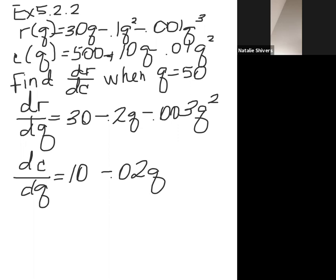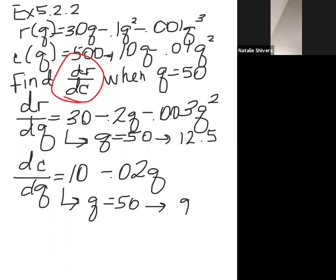So I have my two derivatives. So now I can either do the next step like I did in the first problem, or I can plug in q equals 50 for both of them, which will make it a little bit easier and a little less writing. So if I plug in q equals 50, on dr dq, I get 12.5. And if I plug it in for dc dq, I get 9. So now I need to worry about, again, I'm looking for dr dc. So we just did this one.